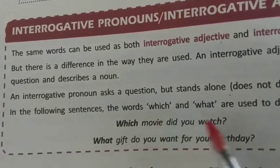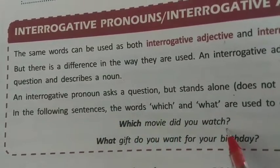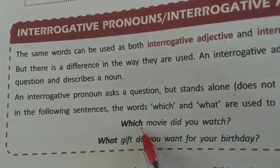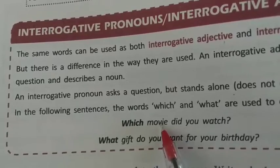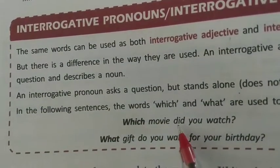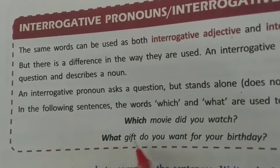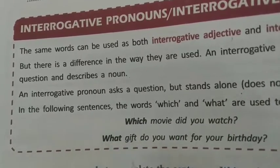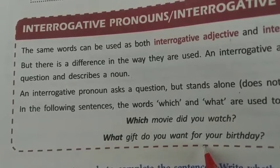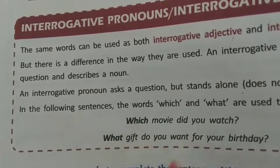In the following sentences, the words 'which' and 'what' describe a noun. 'Which movie did you see?' (तुमने कौन सी movie देखी?) - यहाँ पर 'which' movie की quality को show कर रहा है। 'What gift?' - यानि तुमसे gift के बारे में inquiry करना है कि तुम अपने बड़े पर कौन सा gift चाहते हो। ये interrogative adjective type के questions होते हैं।